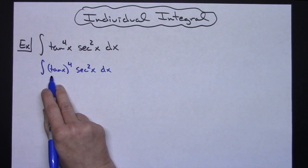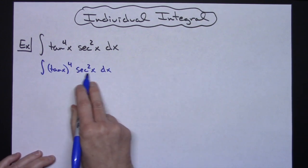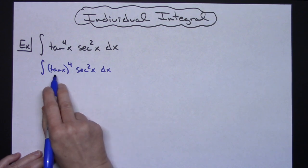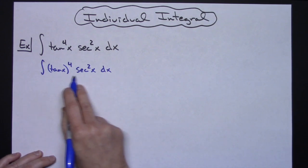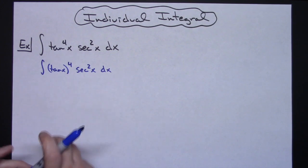What I'm doing is looking for a u that when I take its derivative, it's going to cancel out something else in my integral. And the derivative of tangent is secant squared. So hopefully rewriting that original one allows you to see what that u-substitution is going to need to be.